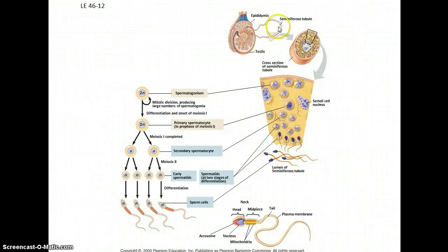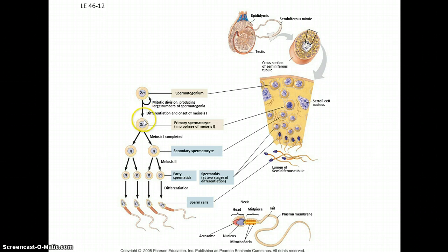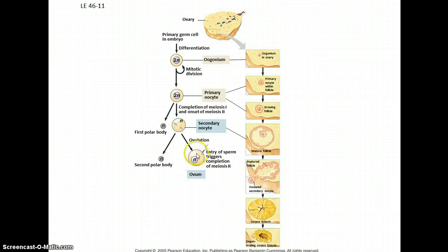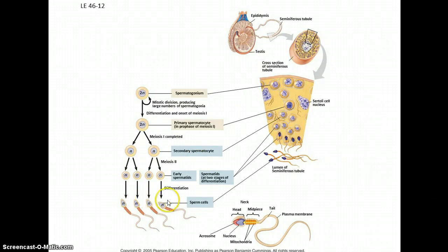In spermatogenesis, the testes have seminiferous tubules where all the sperm cells are made; they converge on the epididymis, which twists around as a long tube. Diploid stem cells reproduce themselves, but some become the primary spermatocyte, which goes through meiosis one to become the secondary spermatocyte, then meiosis two to become the sperm cells. A big difference from females: the female only ends up with one viable gamete — the others become polar bodies — due to unequal division of cytoplasm during meiosis. In males, all four products are equally viable, and of course males produce a large number of them.